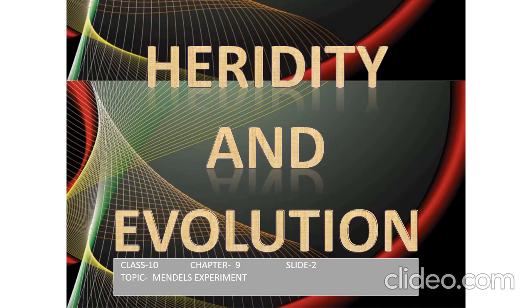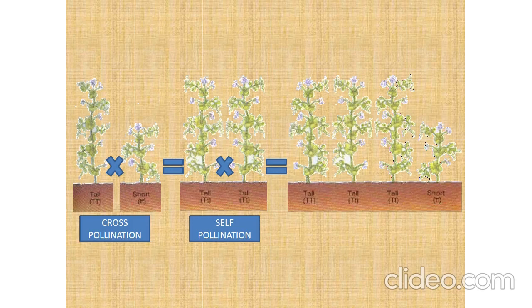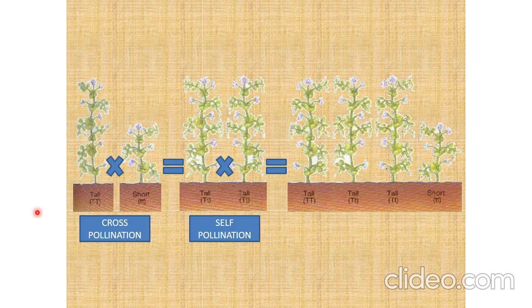And each pea plant produced many seeds in one generation, so garden pea plant could easily be raised, maintained, and handled. Now continuing further, what is a monohybrid cross? In a monohybrid cross, we take only one contrasting trait. As we have taken in this cross, tall plant is crossed with the short plant.